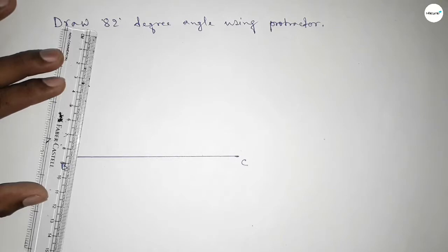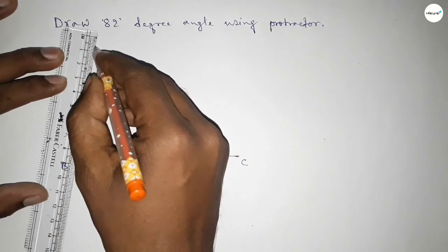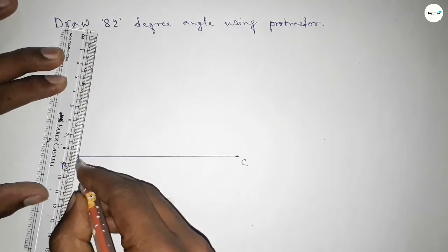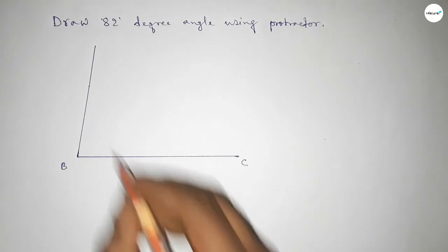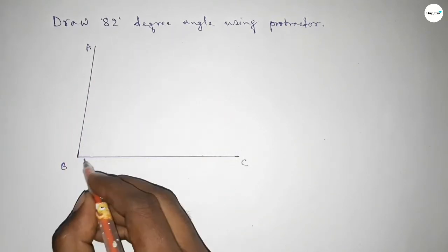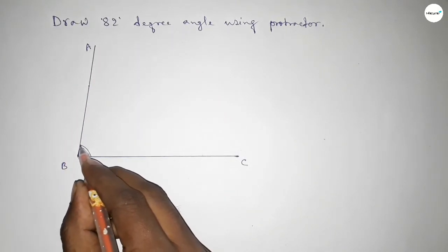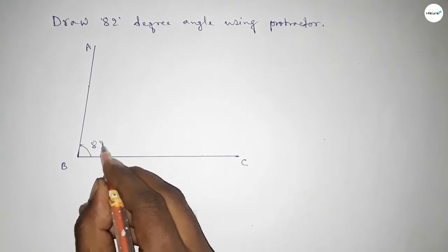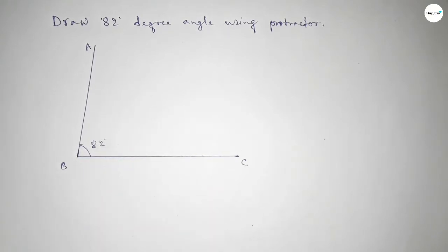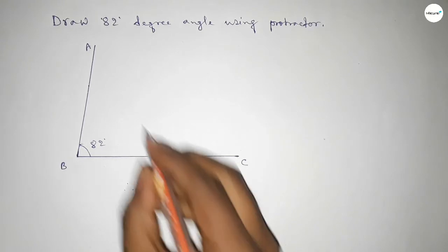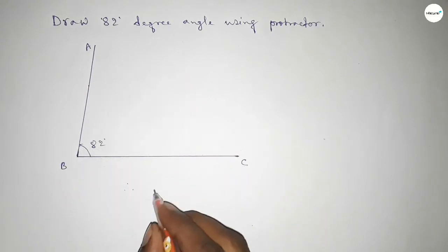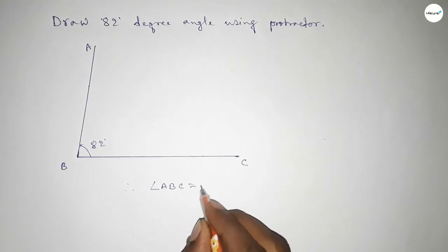So by joining this side we got an 82 degree angle. Taking here point A, so angle ABC - this is 82 degrees. Therefore, angle ABC equal to 82 degrees.